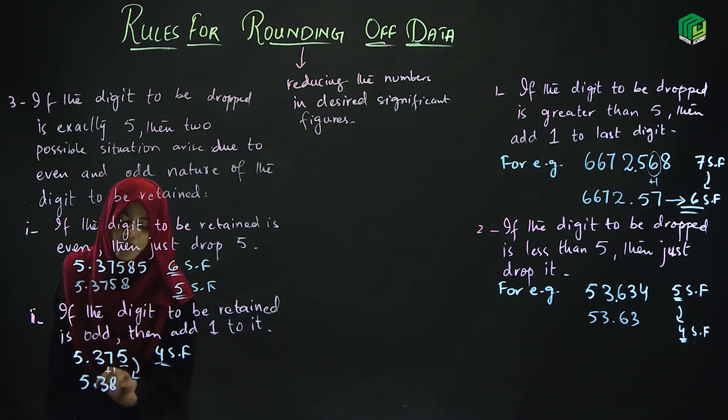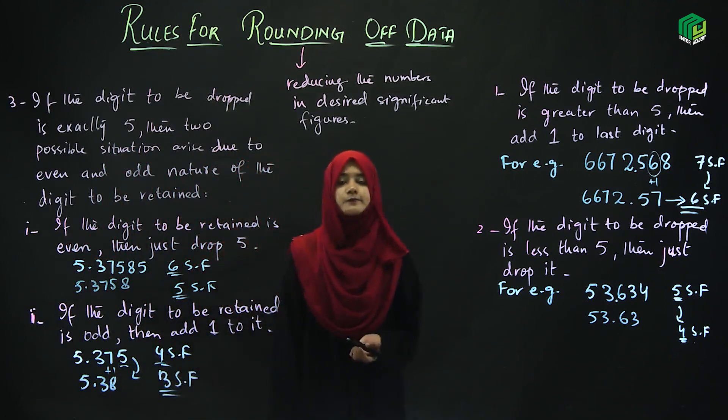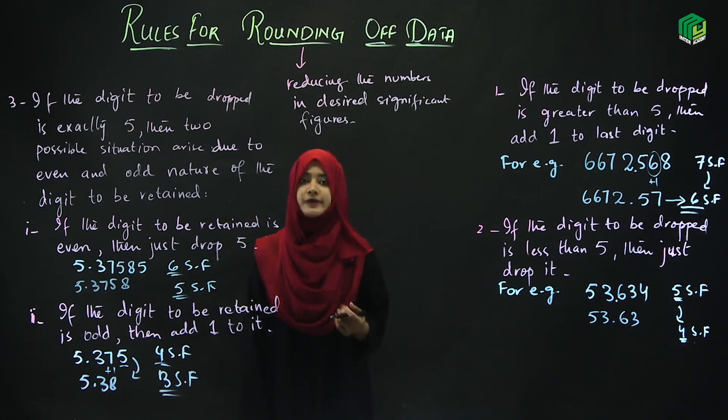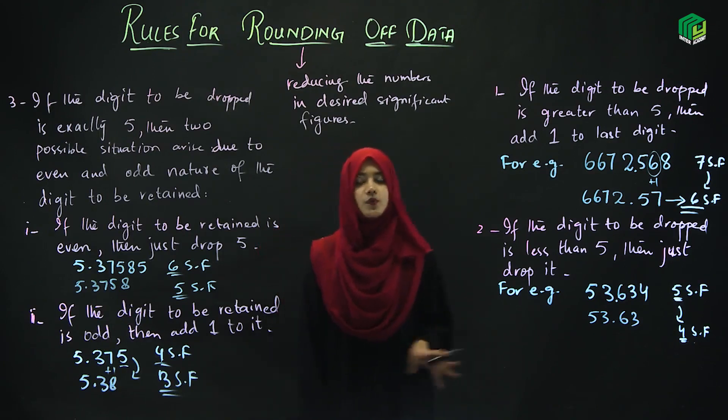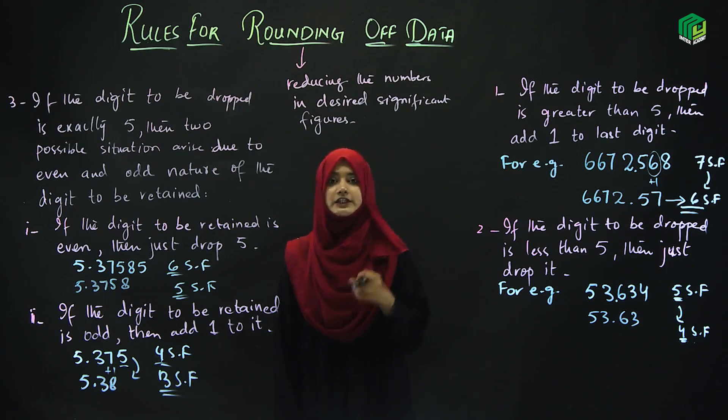Plus 1. So what will you do? 5.3 plus 1 is 8. How many significant figures? 3 significant figures. So the rounded value will be 5.38.